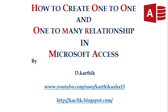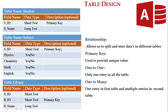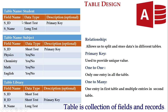In order to achieve this task we should analyze the table design first. We have three tables: student, subject, and library. The student table has field names SID and SNAME, where S stands for student — student ID and student name. Student ID is going to be short text and primary key, and student name is going to be long text.